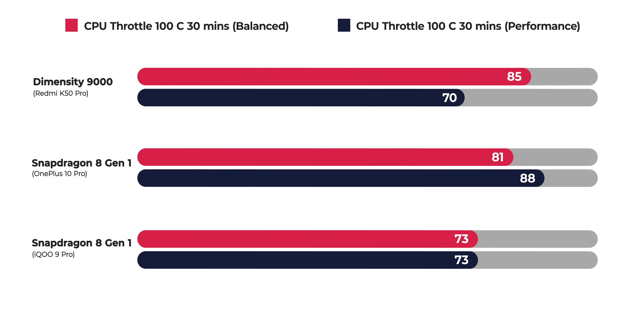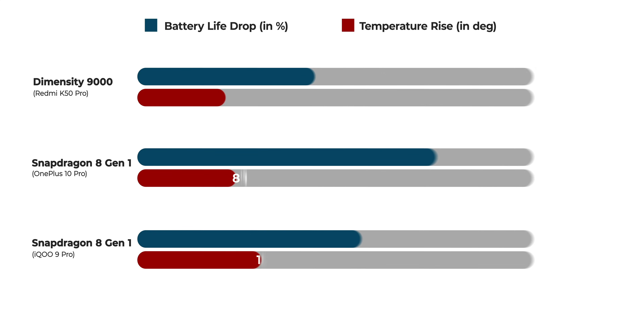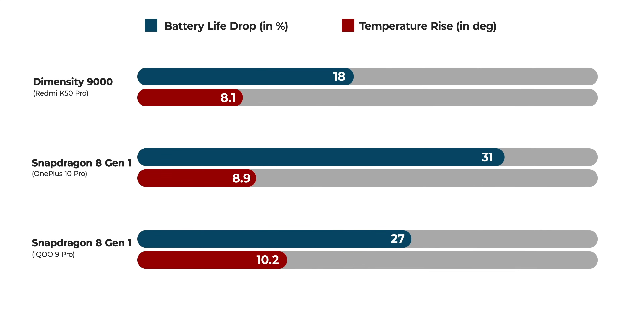Oddly, the OnePlus 10 Pro stayed stable for much longer in performance mode compared to balanced mode, which was completely unexpected. More interestingly, the Redmi K50 Pro with Dimensity 9000 actually lost the least amount of battery life and didn't get as hot as the other two phones. This indicates the Dimensity 9000 could be more power efficient and could also have better thermal performance. I'm exercising caution here with words like 'might' and 'could' primarily because this is the very first time we're running these tests on a Dimensity 9000 phone, and the tuning could vary with different brands. We'll have to run these tests again with other Dimensity 9000 phones to authoritatively conclude.